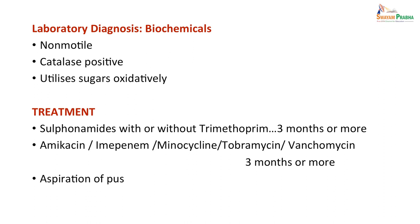Further organ identification is done after the colony: motility is checked — they are non-motile — and they are catalase-positive. They utilize different sugars oxidatively, and depending on the sugars, different species can be differentiated. Treatment is with sulphonamide with or without trimethoprim for 3 months or more. Alternatives are amikacin, imipenem, minocycline, trovafloxacin, and vancomycin. Aspiration of pus is done to limit the spread, and treatment can be for 3 months or more.